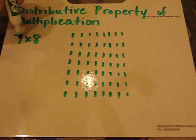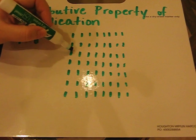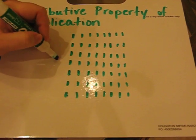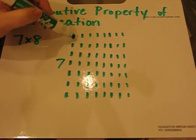When we have the multiplication problem 7 times 8, we say that there's 1, 2, 3, 4, 5, 6, 7 boxes going down.